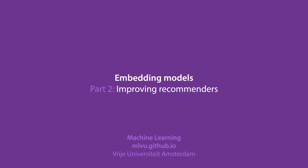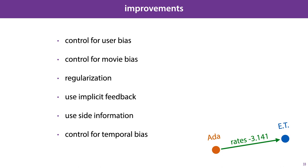In this video, we'll look at how we can take the basic model from the last video and extend it to improve its performance. The topics we'll deal with include how to control for user and movie bias, how to regularize, how to use implicit feedback and side information, and how to control for temporal bias. Most of these tricks are based on the system that ultimately won the Netflix prize, so we'll assume that we have numeric ratings, since that was the case for the Netflix data.